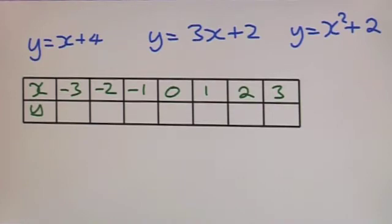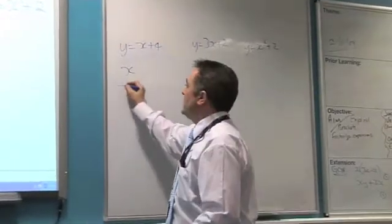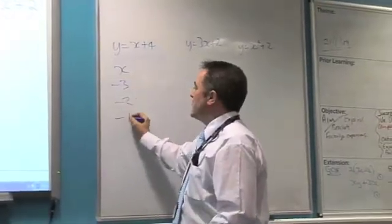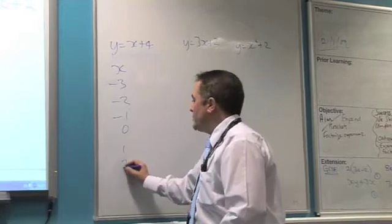Now, let's set our summary. y equals x plus 4. So, I've got the values of x. I've got minus 3, minus 2, minus 1, 0, 1, 2, and 3.